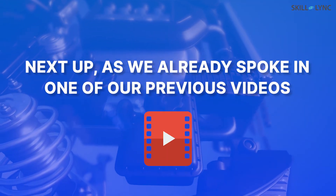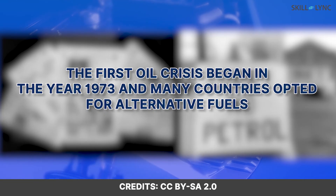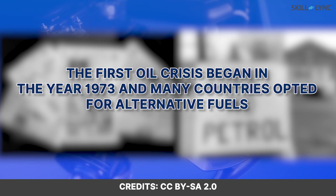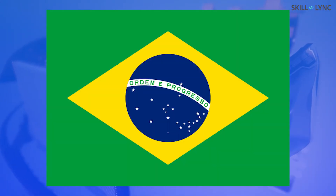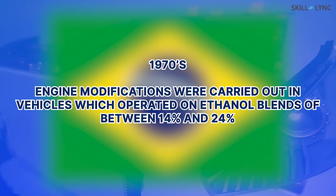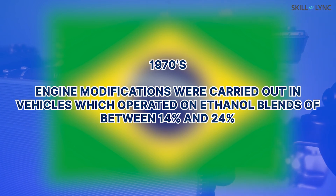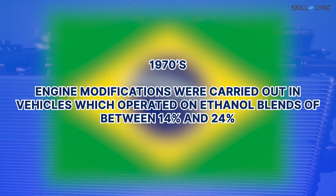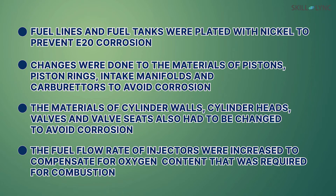When the first oil crisis began in 1973, many countries opted for alternative fuels. Brazil was one such country which opted for the usage of ethanol blends. During the 1970s, the following engine modifications were carried out in vehicles operating on ethanol blends of between 14% and 24% ethanol: fuel lines and fuel tanks were plated with nickel to prevent E20 corrosion; certain changes were also done to the materials of pistons, piston rings, intake manifolds, and carburetors to avoid corrosion; the materials of the cylinder walls, cylinder heads, and valve seats also had to be changed to avoid corrosion; and the fuel flow rate of injectors was increased to compensate for the oxygen content required for combustion.